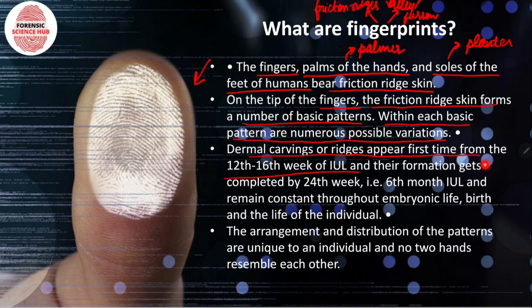Dermal carvings or ridges appear for the first time from the 12th to 16th week of intrauterine life. This point is very important from an exam perspective — the question has been asked several times. The formation is completed by the 24th week, which we can also say is the sixth month, and then they remain constant throughout embryonic life.